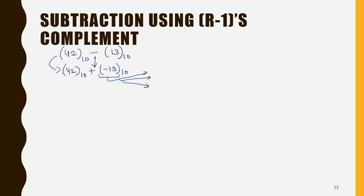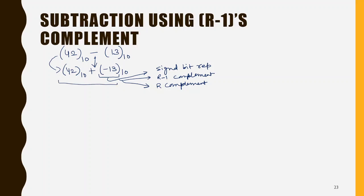There are some methods available which can represent a negative number in a positive representation. The first method we saw was the signed bit representation. The second method is the r minus one complement method, and the last is the r complement method. Now we will see how to perform the operation and get the final answer, because our objective is to find the answer, and the result we obtain from this method should equal the direct result.